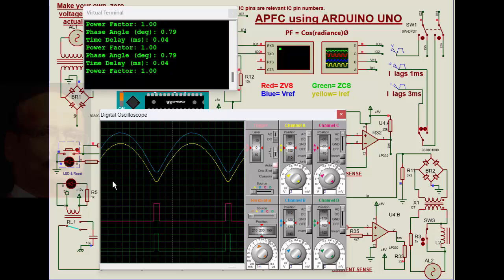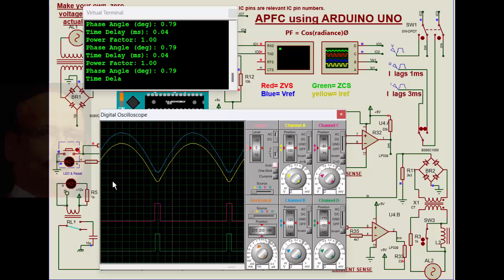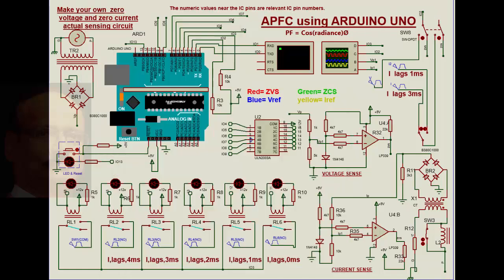Now we will see another arrangement where we also simulate the capacitors coming into picture. The same circuit is used, except that instead of zero current coming from the zero voltage pulses, the zero current is actually being fed from a different place. IO3 is given different lagging current values: 4 millisecond lagging, 3 millisecond, 2 millisecond, 1 millisecond, and zero millisecond. Once it reaches a particular point, it will get locked there — knowing it has reached 2 or 1 millisecond delay — and the current will finally be in sync with the voltage.